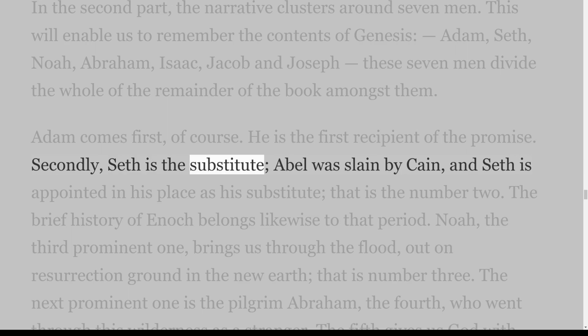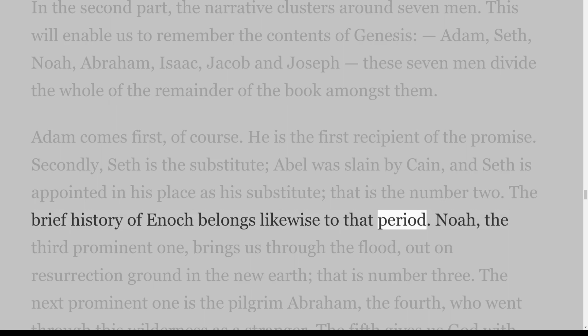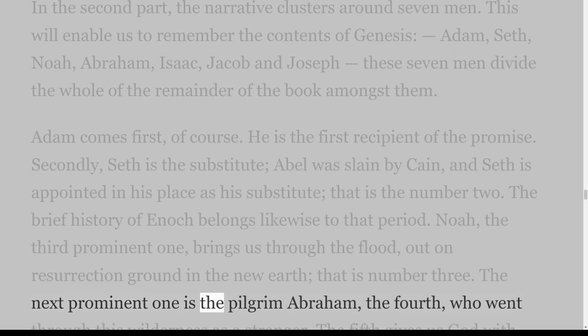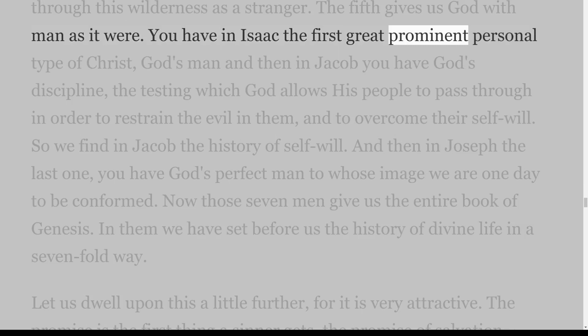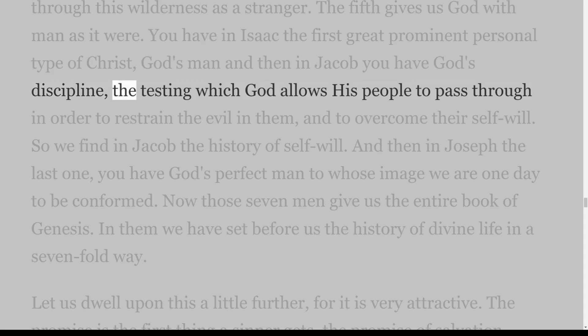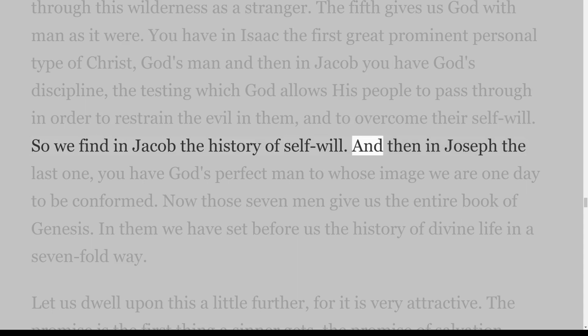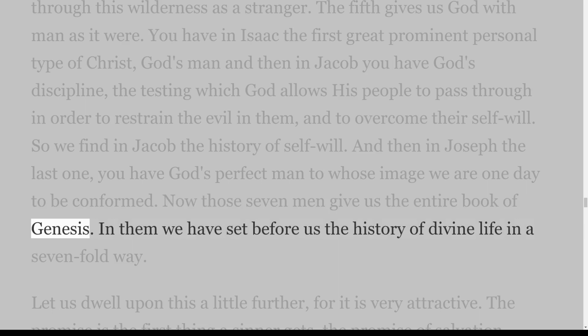Secondly, Seth is the substitute — Abel was slain by Cain, and Seth is appointed in his place as his substitute; that is number two. The brief history of Enoch belongs likewise to that period. Noah, the third prominent one, brings us through the flood, out on resurrection ground in the new earth — that is number three. The next prominent one is the pilgrim Abraham, the fourth, who went through this wilderness as a stranger. The fifth gives us God with man as it were — you have in Isaac the first great prominent personal type of Christ, God's man. And then in Jacob you have God's discipline, the testing which God allows his people to pass through in order to restrain the evil in them and overcome their self-will.